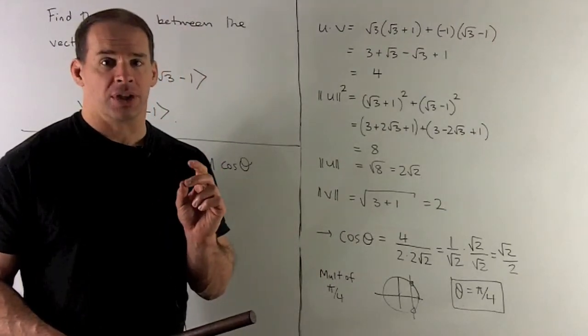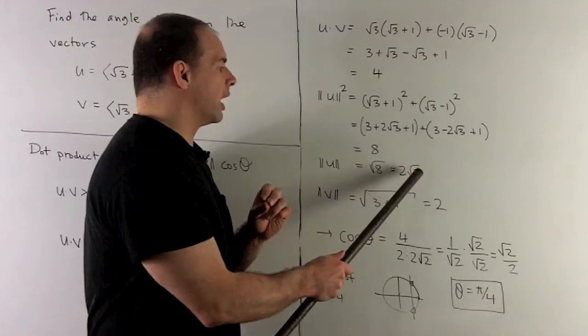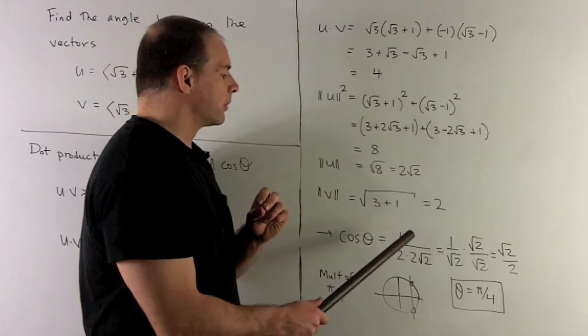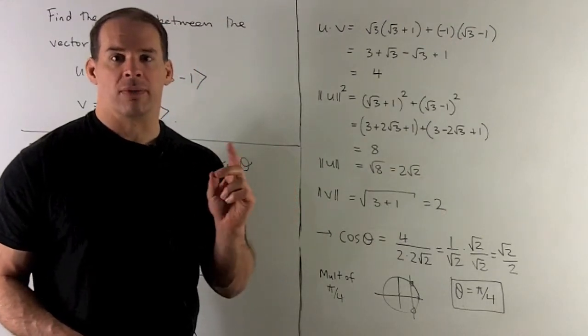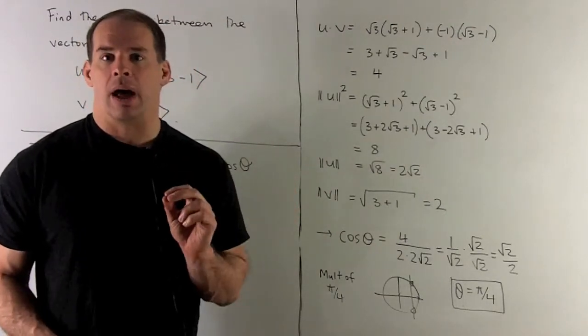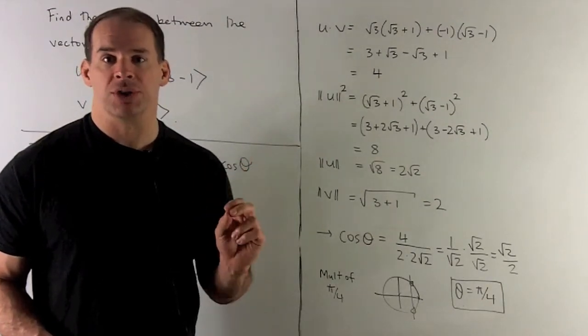Length of v: we take the square root of 3 plus 1, so we get 2. So we have our three items. Our cosine equals 4 over 2 times 2√2, which gives me 1 over √2. I can clean that up by multiplying by √2 over √2, and that gives me √2/2.